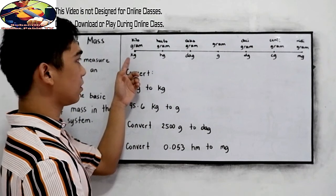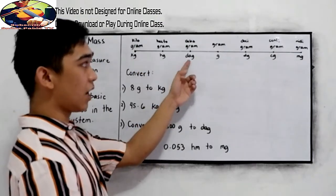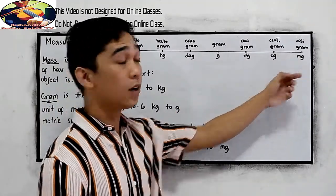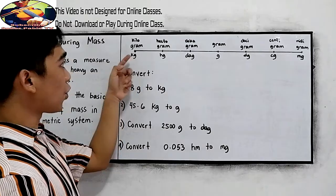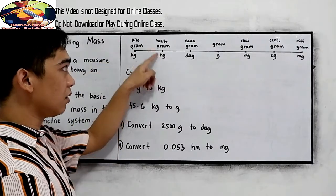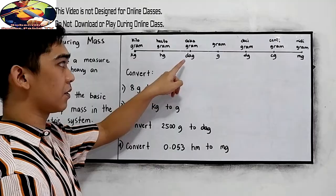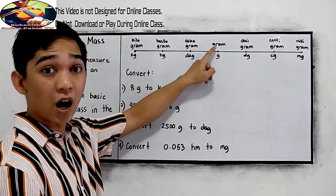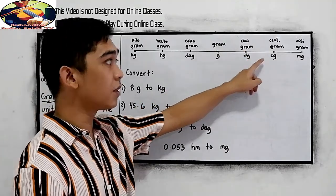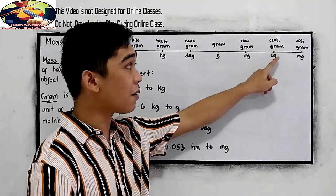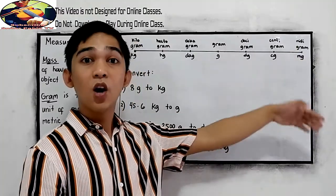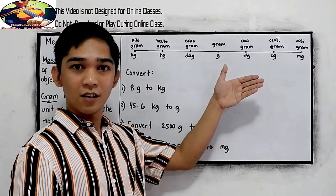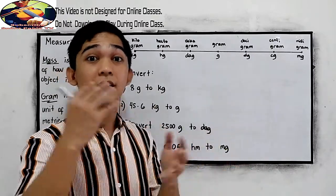We have KG for kilogram, HG for hectogram, DAG for decagram, G for gram, DG for decigram, CG for centigram, and MG for milligram. We will be using this conversion table to easily convert a certain unit to our desired unit.